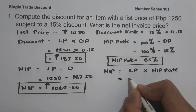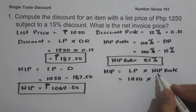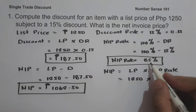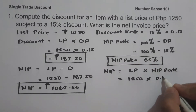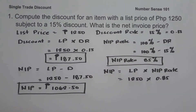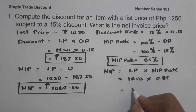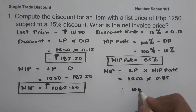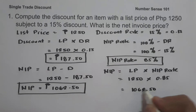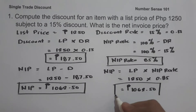So we have one thousand two hundred fifty multiplied by the NIP rate, which is eighty-five percent or zero point eighty-five. If you multiply this, we get one thousand sixty-two point fifty pesos. We come up with the same answer.